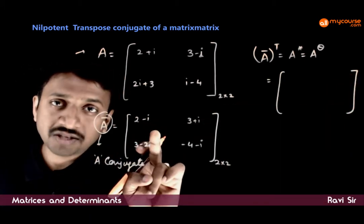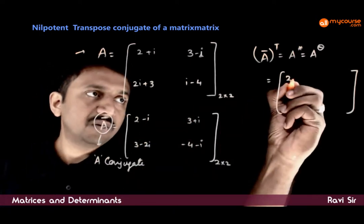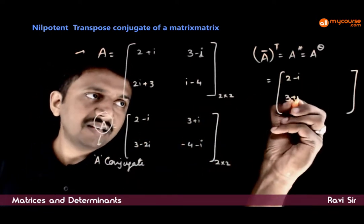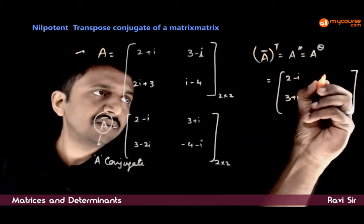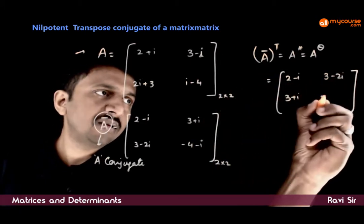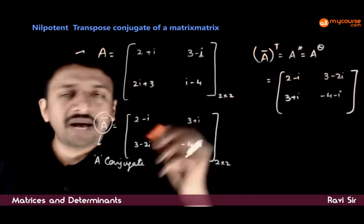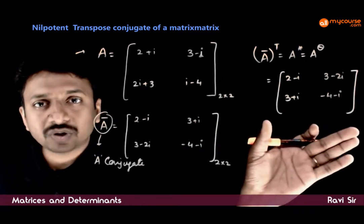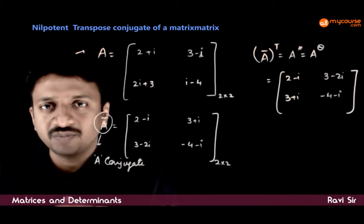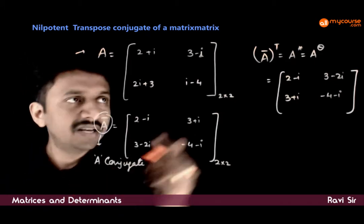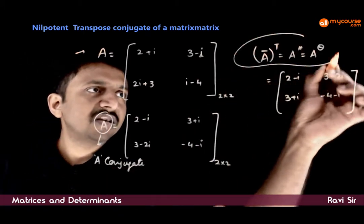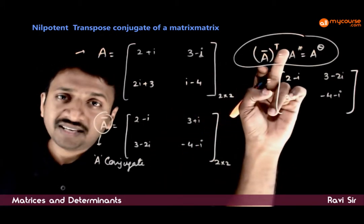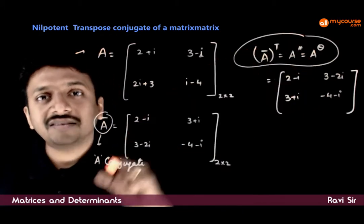It is the conjugate matrix transposed. So: 2-i, 3+i — the rows become columns — 3-2i, -4-i. So this is the transpose conjugate, or the conjugate transpose. The representation is either A conjugate transpose, A star, or A theta.